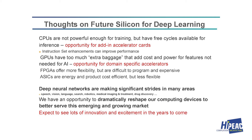What do I think about future silicon for deep learning? CPUs are not powerful enough for training, but they have free cycles so sometimes you'll use them. There's an opportunity to add accelerator cards — exactly what Google did when they added the TPU as a PCIe card — and there will be instruction set enhancements to improve deep learning performance. In my opinion, GPUs have too much extra baggage — they weren't designed specifically for machine learning. A scaled-down version of the GPU would work much better, and many startups have gone with domain-specific accelerators more efficient in area and power.